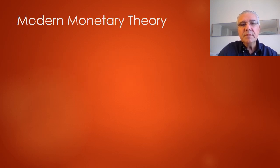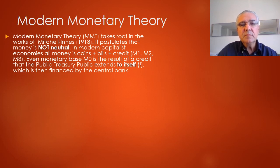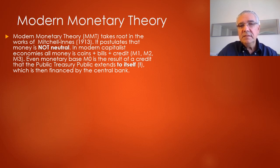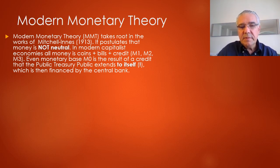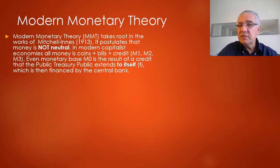So what is Modern Monetary Theory? It takes its roots from the work of Mitchell Innes, an economist in the beginning of the 20th century. It postulates that money is actually not neutral. In modern capitalistic economies, money is composed of coins, bills, and credits — as we know from looking at the monetary aggregates M1, M2, and M3. Even M0, the monetary base, is the result of a credit that the public treasury extends to itself, which is an interesting phenomenon we'll return to. That credit line is financed by the central bank.